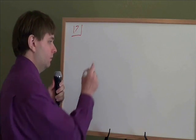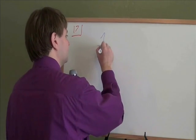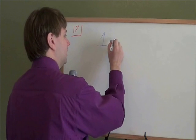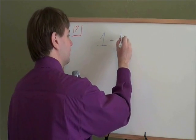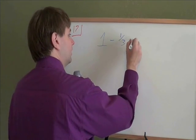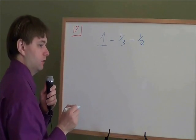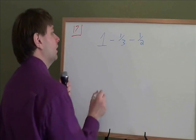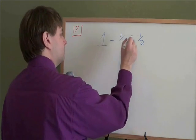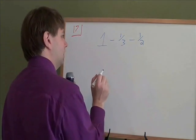So for this word problem, we have one entire box of books. We're taking away the part that's accounting books, which is 1 third. We're also taking away the part that is economics books, which is 1 half. And we want to see what's left over to be the finance books. Well, any time we're adding or subtracting fractions, we need a common denominator.